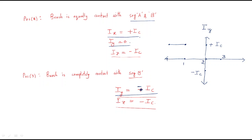At position two the current across the Y conductor is zero — it reaches zero at position two. At position three the current value becomes −IC, and after position three the current continues to vary accordingly.